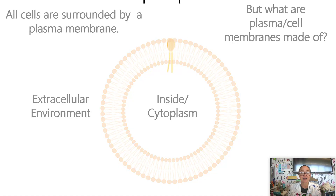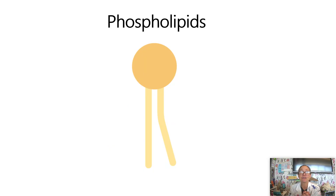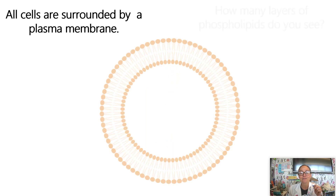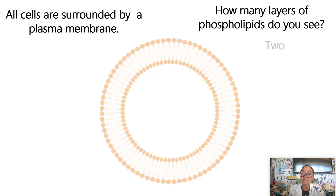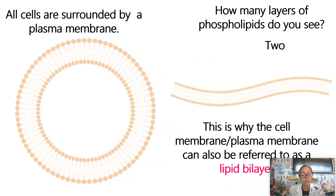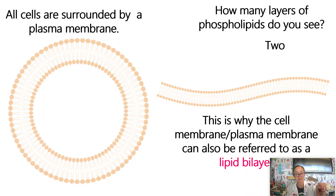When we think about what cell membranes are made of, we have phospholipids. Phospholipids actually come in two layers around the plasma membrane. The words 'plasma membrane' and 'cell membrane' are used interchangeably, so you'll hear both. When we look at our plasma membranes, we see that there are two layers of phospholipids — this is why the cell membrane is referred to as a lipid bilayer.